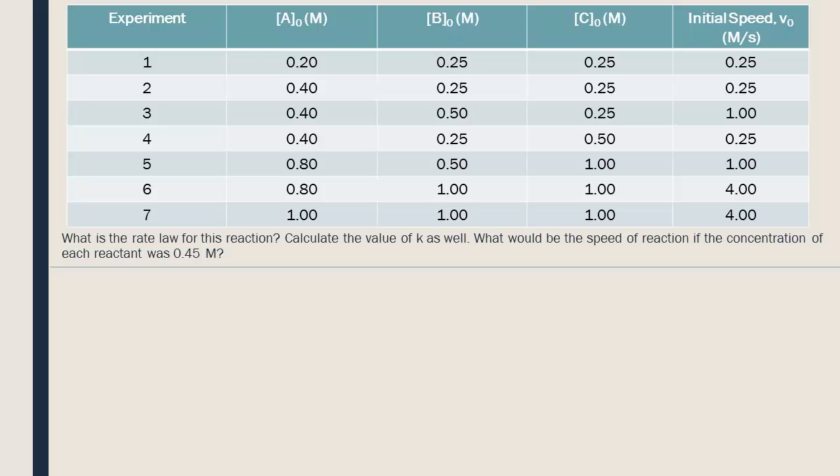We are going to use the isolation method. Here is the incomplete rate law for this reaction. We need to determine the effect of each reactant on the speed and then solve for the value of the rate constant, k.